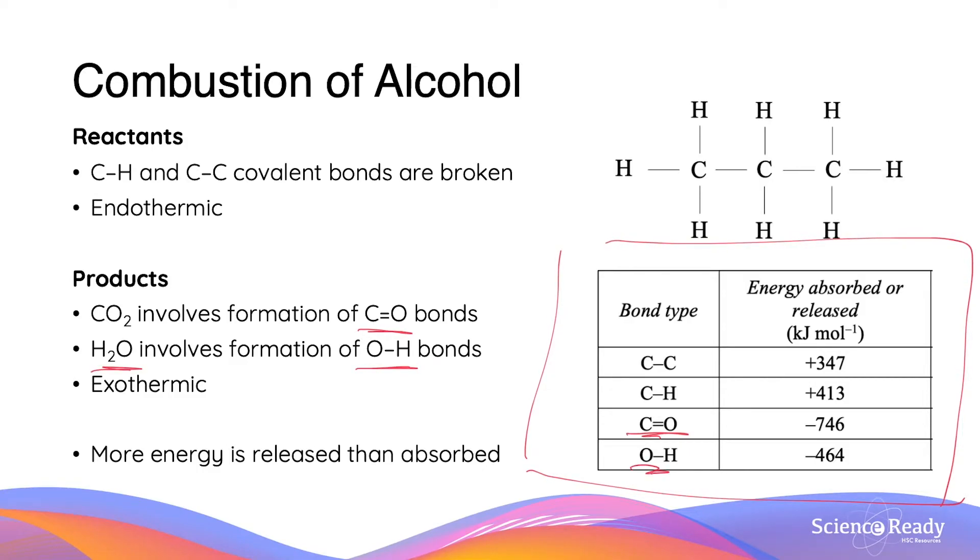What we can do to calculate the total bond energy is if we add up all the total bonds which are broken and formed, we multiply them by their respective bond energies and then sum them up. In the case of the combustion of alcohol, we will find that more energy is going to be released than that which is absorbed.